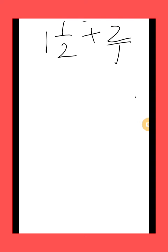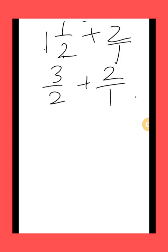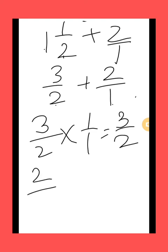Now see another question: 1 and 1 by 2 plus 2. In this question your first fraction is a mixed fraction, so first of all we will convert it into an improper fraction. And in the second fraction the denominator is not given, so we will write 1 as the denominator. Converting: 2 ones are 2, plus 1 gives 3 by 2; and plus 2 by 1. The denominators are different, so they are unlike fractions. We will make them like fractions; the LCM is 2 multiplied by 1, which is 2. The first fraction 3 by 2 stays as 3 by 2 (multiply by 1). Next fraction 2 by 1: in the 1 times table, 2 comes at 2, so we multiply by 2, giving 4 by 2.